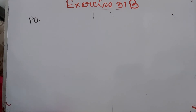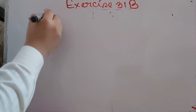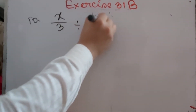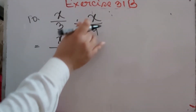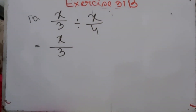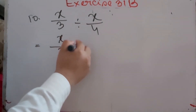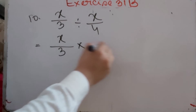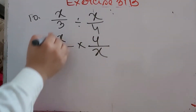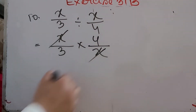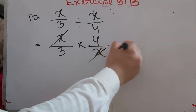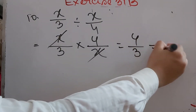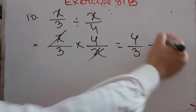Number 10: x/3 divided by x/4. To divide, multiply by the reciprocal of x/4, which is 4/x. So x/x = 1, and the answer is 4/3, which equals 1 whole 1/3.